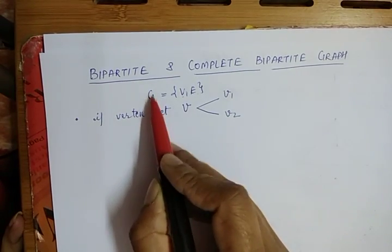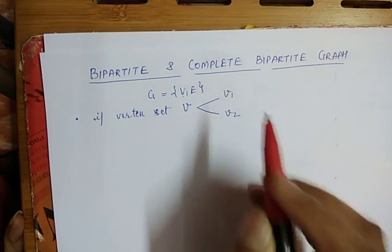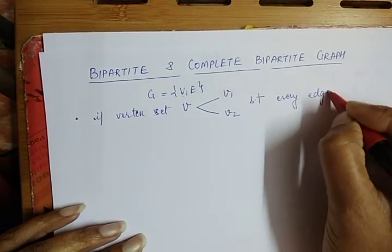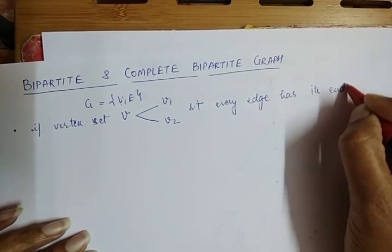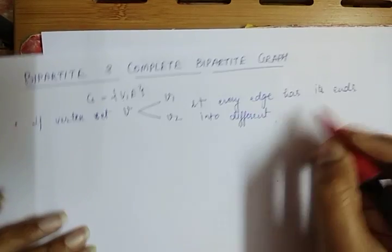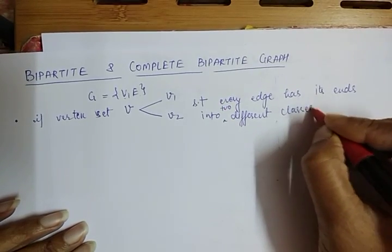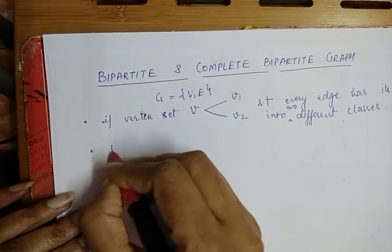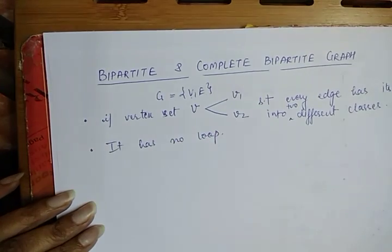The first condition is that G is known as Bipartite if the vertex set V can be split into two parts, V1 and V2, such that every edge has its ends in two different classes. The second condition is that it has no loop.